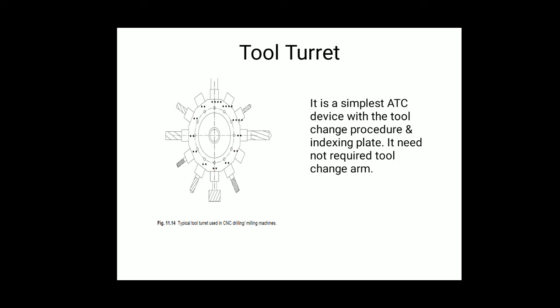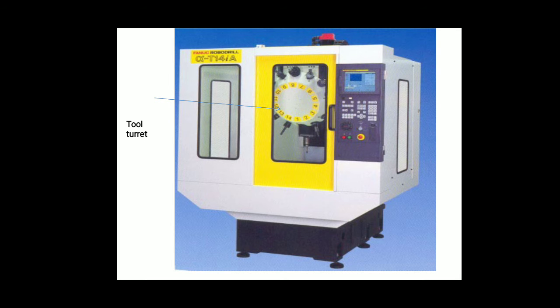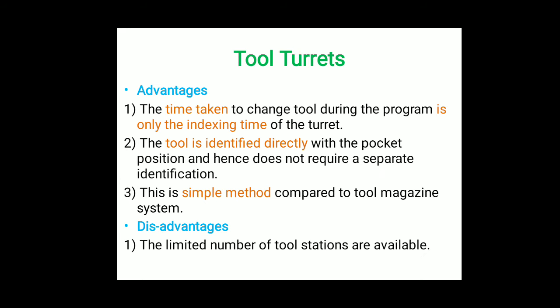You can see here one picture of the tool turret on a CNC machine. We can store up to 12 tools in the tool turret system. This is an advanced method for changing and storing tools. By using this tool turret we can manufacture the required product.